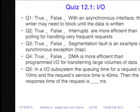So, quick quiz — we've got five questions. First: with an asynchronous interface, the writer may need to block until the data is written. Second: interrupts are more efficient than polling for handling very frequent requests. Third: segmentation fault is an example of a synchronous exception or trap. Fourth: direct memory access is more efficient than programmed I/O for transferring large volumes of data. Fifth: in an I/O subsystem, the queuing time is 10 milliseconds and the request service time is 40 milliseconds — the total response time is blank milliseconds.